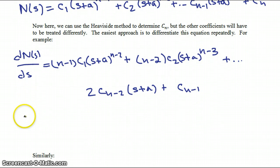And therefore, at a value of s equal to minus a, if we evaluate our derivative of N of s with respect to s at that point, then we get our coefficient cn minus 1, because all the other coefficient terms drop out.